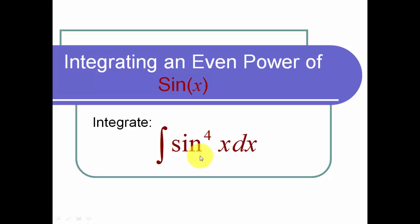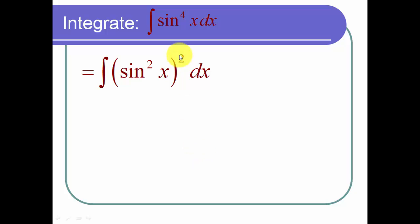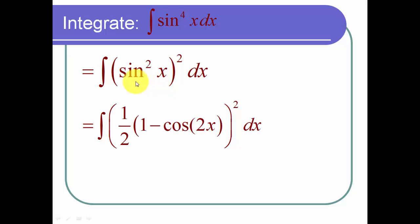Therefore, what we do is take sine to the fourth of x and rewrite it as sine squared of x, squared. That allows us to use the half-angle formula on sine squared of x. The sine squared of x is equal to one half times one minus the cosine of 2x.